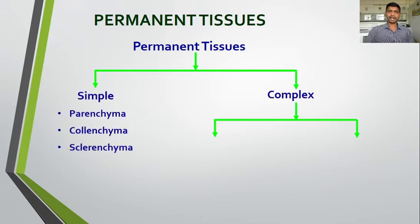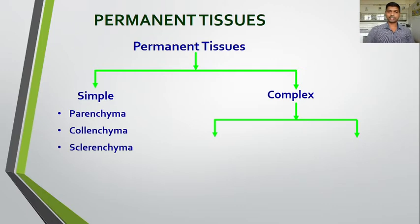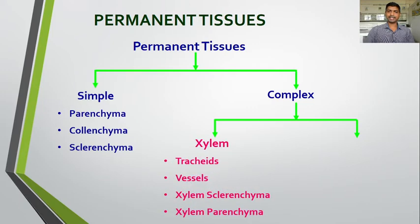Simple tissues are parenchyma, collenchyma, and sclerenchyma. In addition, one more simple tissue is chlorenchyma — it is like collenchyma but if it possesses the chlorophyll pigment, such simple tissue is called chlorenchyma. The complex tissue includes xylem, which is made up of tracheids, vessels, xylem sclerenchyma, and xylem parenchyma — different cell types from which the tissue has been developed.